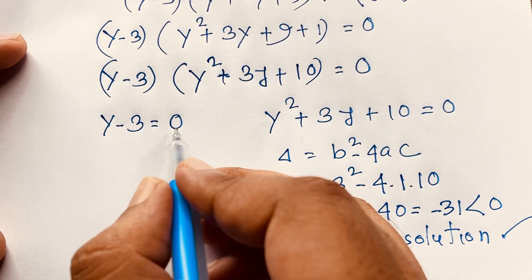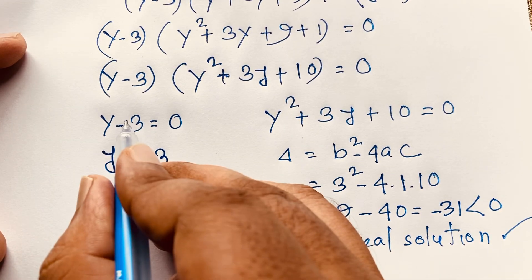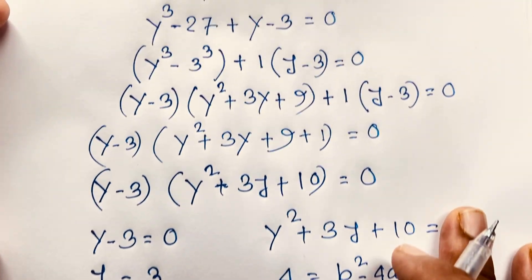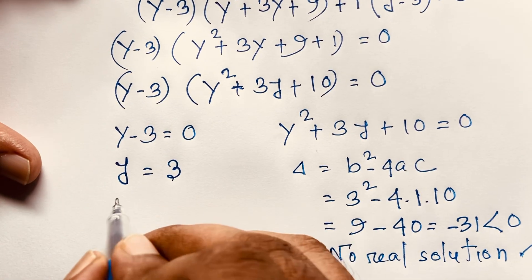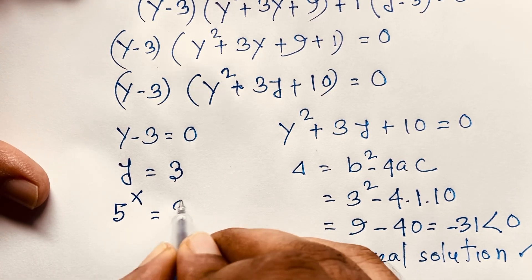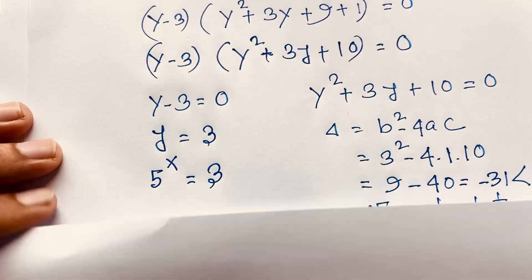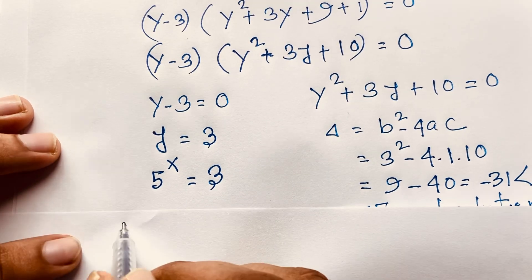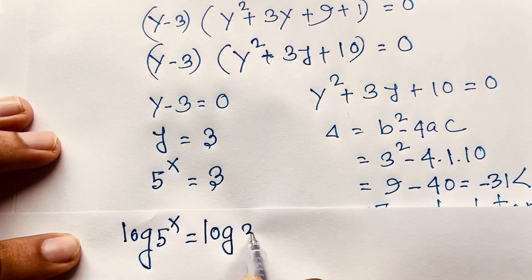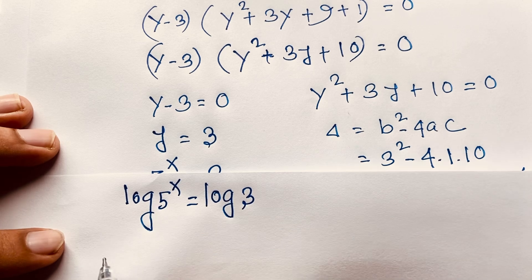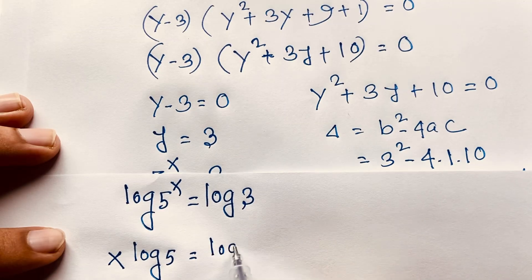So from y − 3 = 0, equivalently y = 3. But remember that y equals 5 to the power x, so 5 to the power x is equal to 3. Now I apply log to both sides: log(5^x) = log 3, so x · log 5 = log 3.